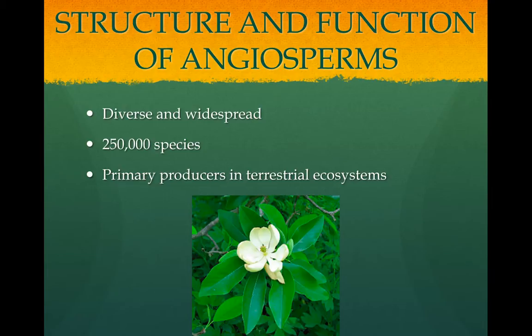Angiosperms are the most diverse and widespread of all land plants, and there are over 250,000 known species. They are the primary producers and the base of all food webs for almost all terrestrial ecosystems.